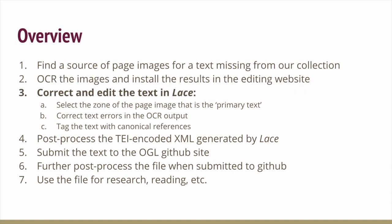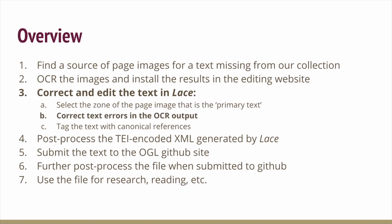Once the image and OCR result packages are installed on the editing site, we do the work there that makes a preliminary digital text in TEI-conformant XML. We use our mouse to select the zone of the page image that relates to the primary text of the edition we're editing. We might also select the commentary or translation if that's helpful. Then we correct the errors in the OCR output. When that's corrected, it can also be used to retrain the OCR engine. Finally, we put tags in the text to show where the sections of the text lie, so that the computer knows where, for example, Thucydides 2.22 begins.